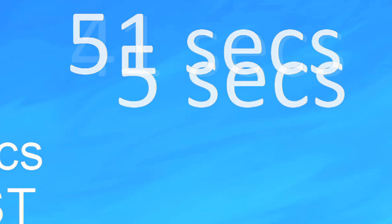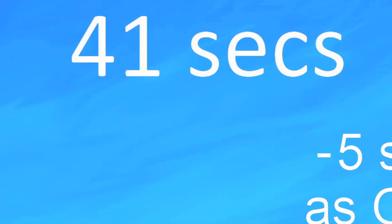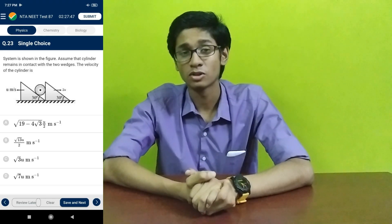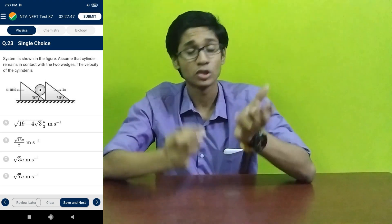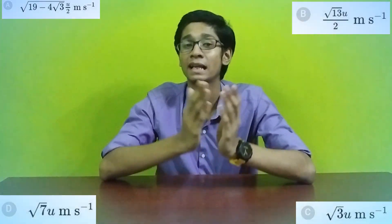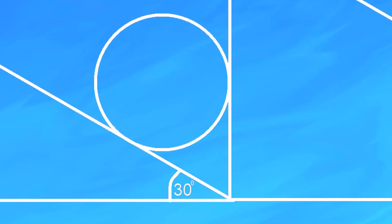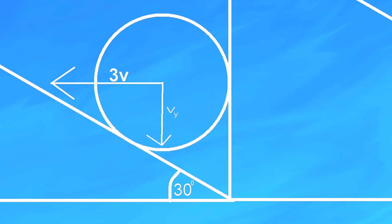Now, let us assume you will take 5 more seconds to bubble it correctly. So basically you have 40 seconds to think through the solution of this question and also calculate it correctly, which will definitely result in some bad results looking at the options. Now, the method of solving the question: what you will have to do is look at this from the frame of reference of the right wedge. The right block appears to be moving at 3v towards the left, so we will have to equate the components of velocities along the common normal. So, vy·cos30 = 3v·sin30, giving vy = √3·v.